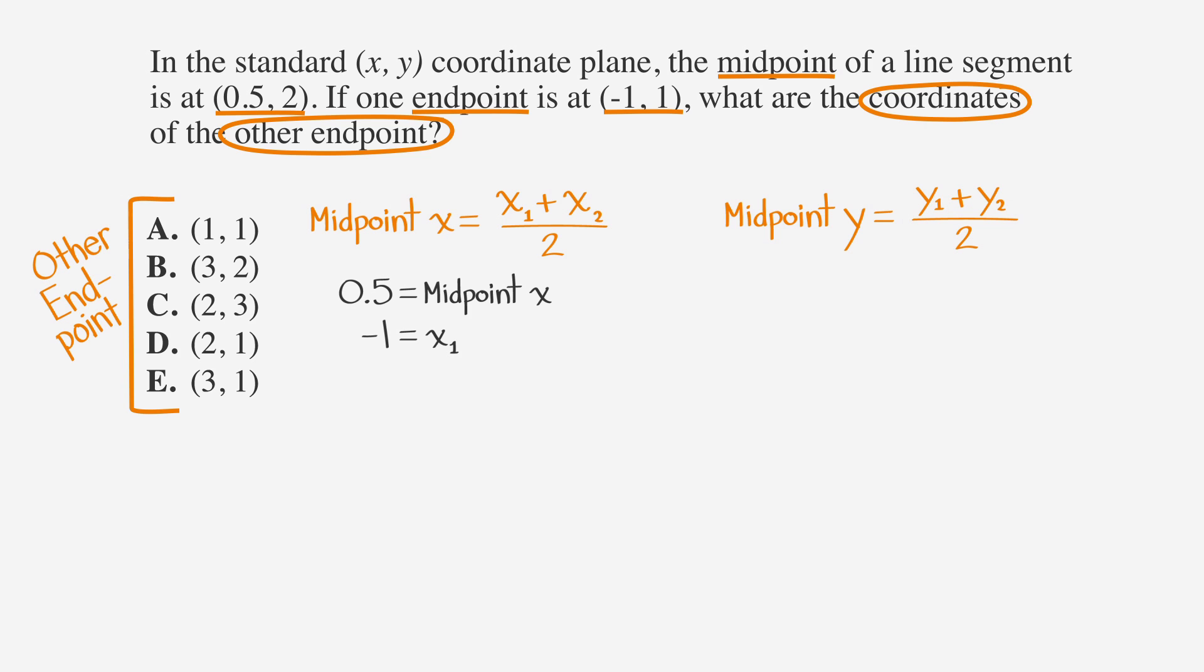We can solve for x2 by multiplying both sides by two, and then adding one to both sides to find that the x coordinate of our endpoint is two. Let's see if we can eliminate any answer choices.